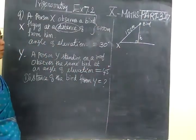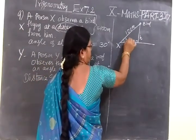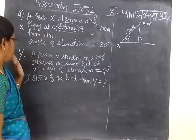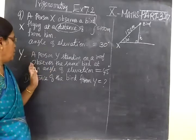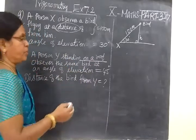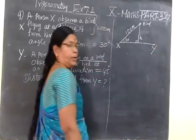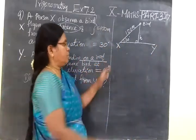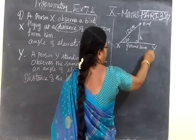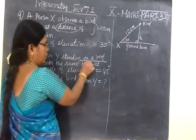Next, it is given that the angle of elevation is 30 degrees. Person X observes the bird at an angle of elevation of 30 degrees. Next, a person Y is standing on a roof — both persons are on opposite sides. Person Y is not standing on the ground level; he is standing on a roof.